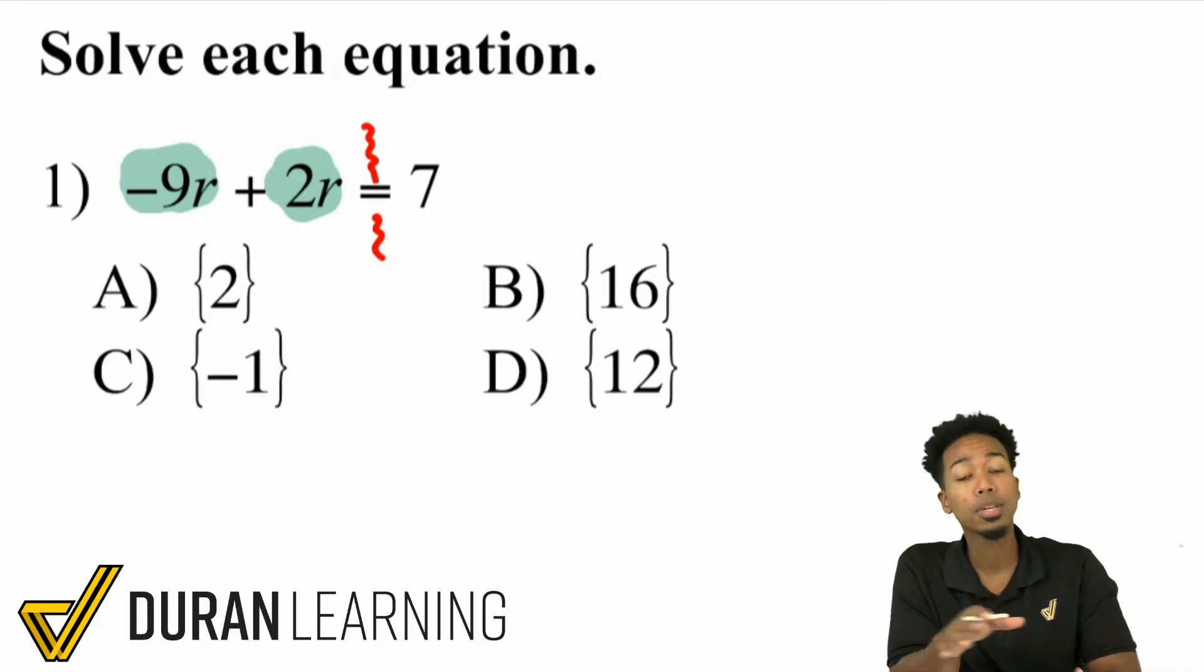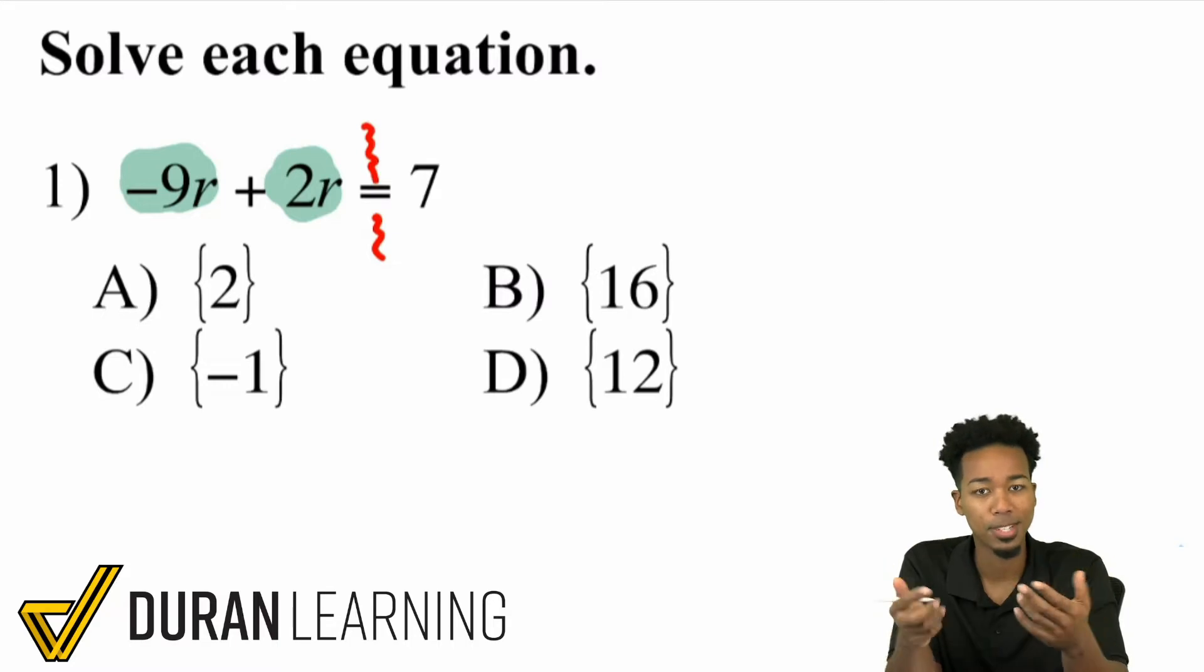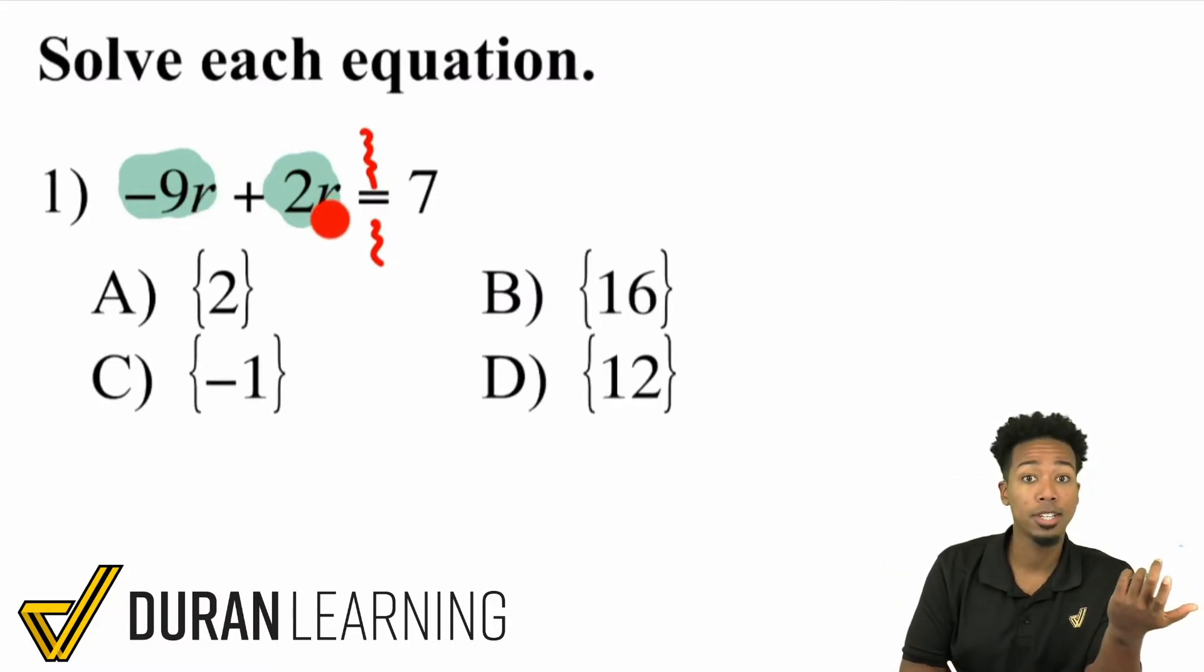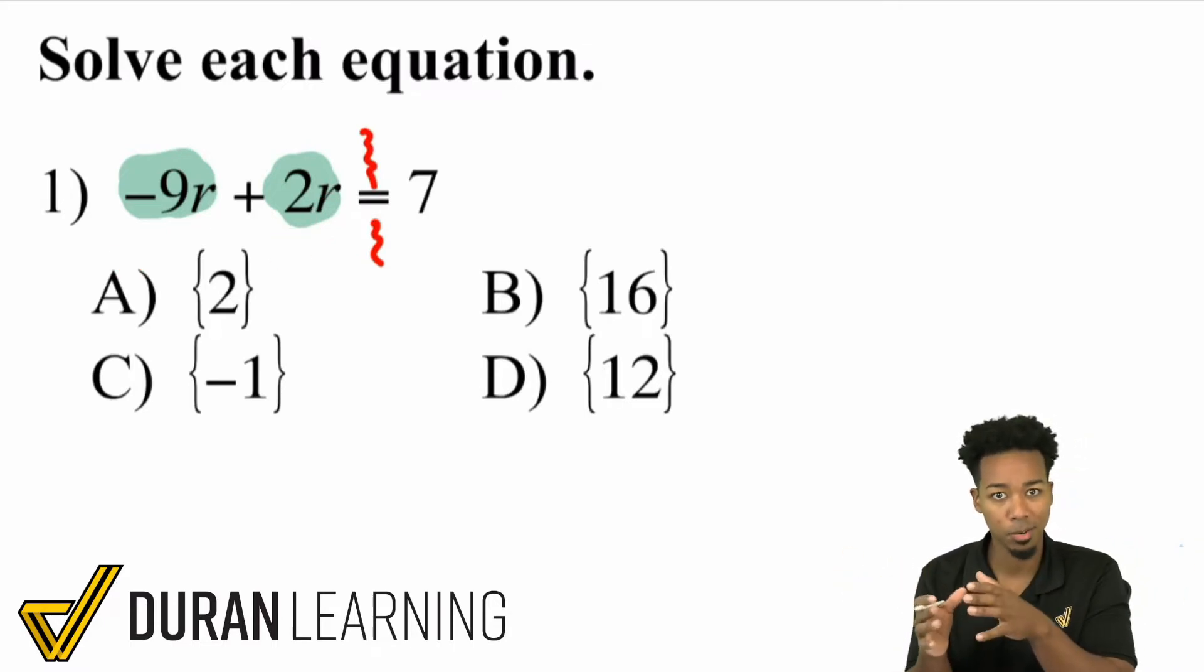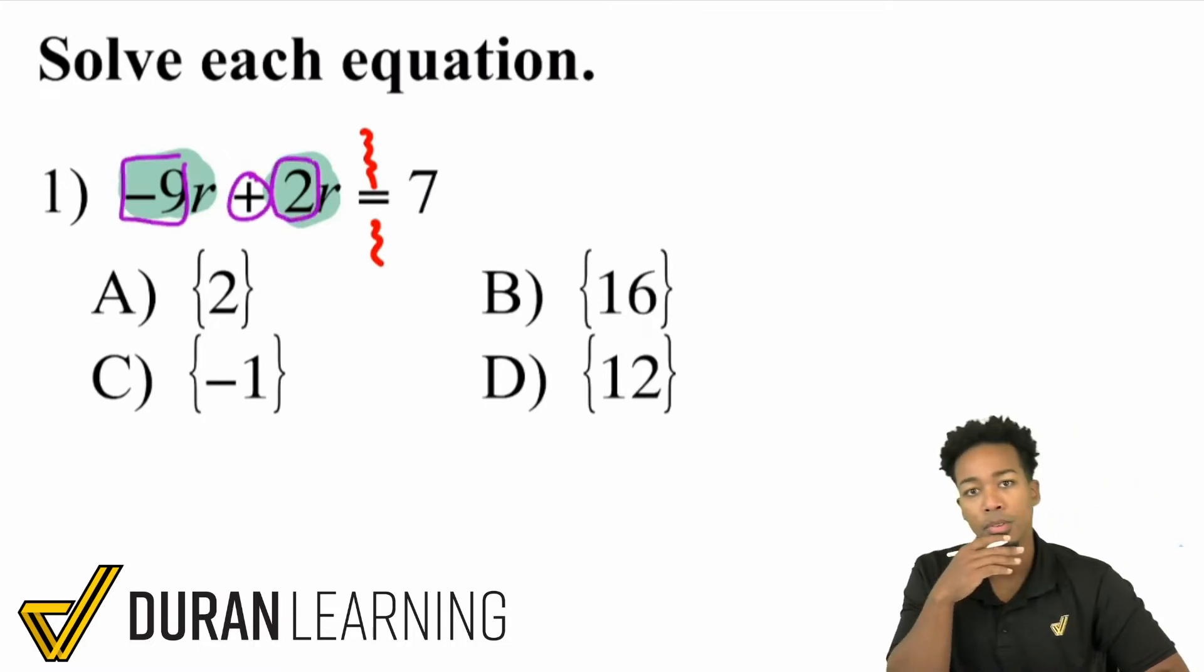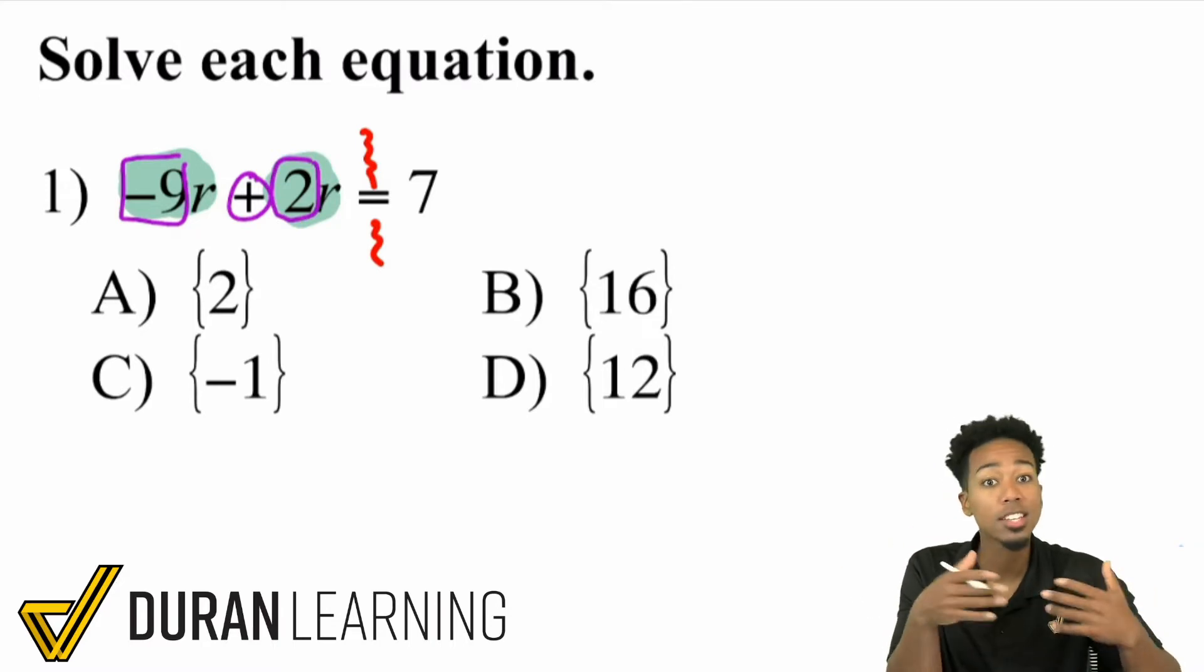The answer is yes, because they're like terms. Remember, like terms have the same variables and exponents. And if you notice, we have just r and just r. So yeah, the 9 and the negative 2 can combine to make one solid variable instead of having two separated. So when we think about that, what's negative 9 plus 2? Well, you have a negative plus a positive. So just take the difference. 9 minus 2 is 7. But you're going to keep the sign of the bigger number. So that's the 9, which is negative.